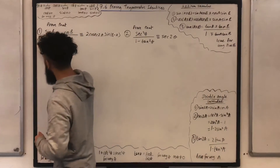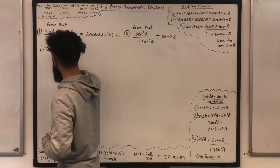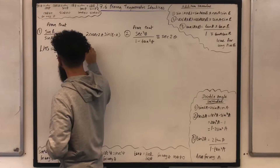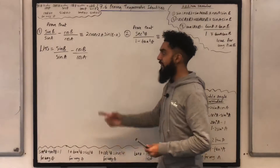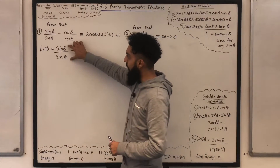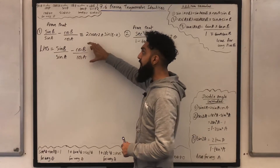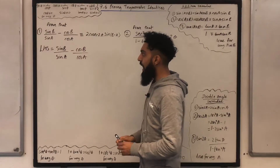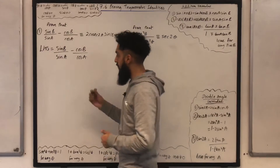LHS in short. What I need to do is subtract these two fractions. So I'm going to multiply the first fraction by cos A, top and bottom, and the second fraction by sin A, top and bottom. If I do that, I obtain a single fraction.